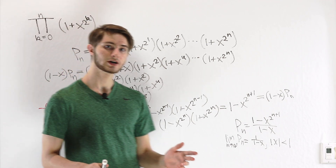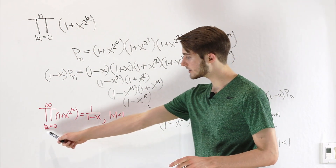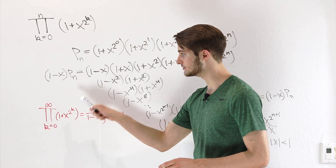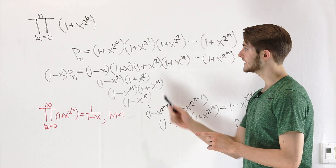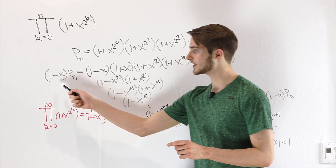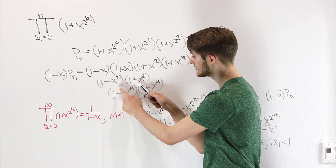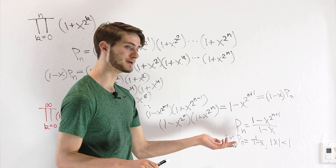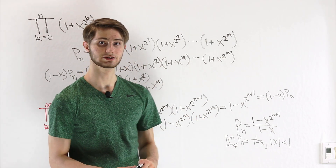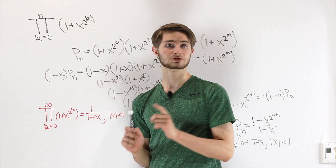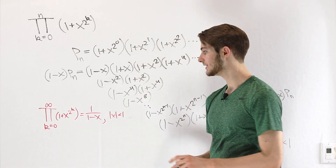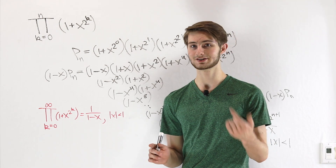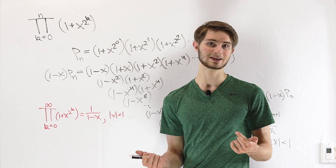So that is the infinite product formula for 1 over 1 minus x: the product from k equals 0 to infinity of 1 plus x to the power of 2 to the k. We got that by realizing that if we take our finite product and multiply by (1 minus x), we get a bunch of differences of squares all the way down to the last factor, giving us a finite product representation where we could take the limit. This infinite product actually works for complex numbers as well, as long as the magnitude is less than 1. So now we can write 1 over 1 minus x not just as an infinite sum, but also as an infinite product.